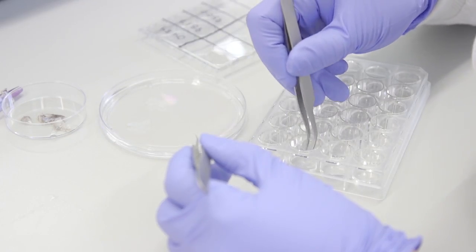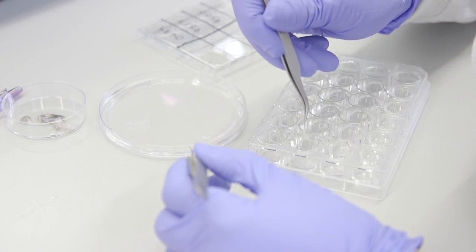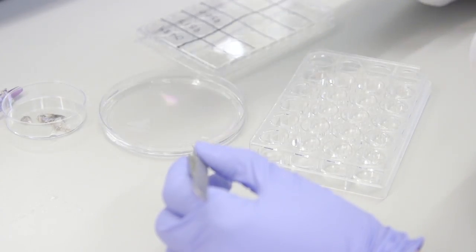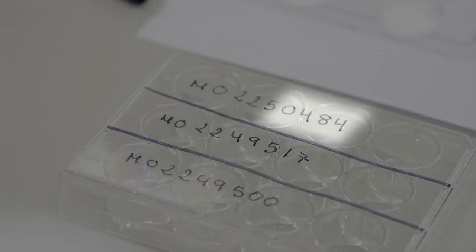Once you have all four epidermal sheets from a sample, transfer these to the 24-well plate, putting two sheets in each well. It is crucial you check that the ID written on the 12-well plate that you took the sample from matches the ID on the 24-well plate that you transfer the sample into.